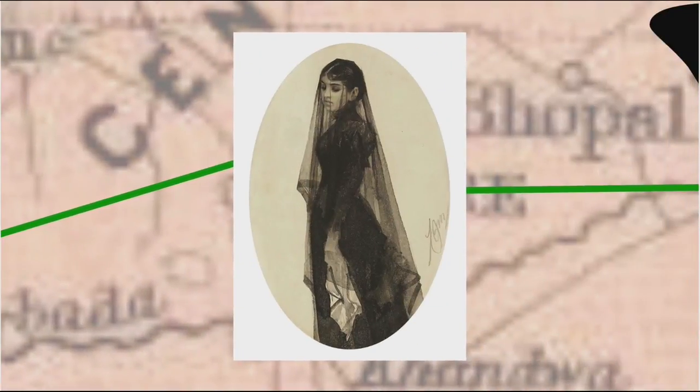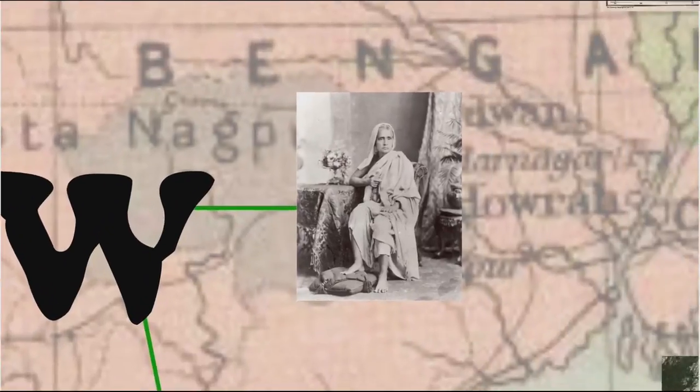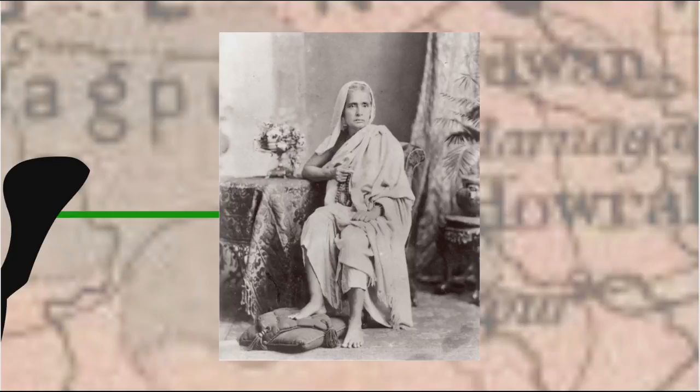In Western cultures we typically think of widows wearing black to show they're in mourning, but this colour association isn't universal. For instance, in India, according to Hindu tradition, a widow wears white, but the idea is similar — to avoid wearing colourful clothing and adornments. As we'll see, this example of Indian custom isn't just a random digression.